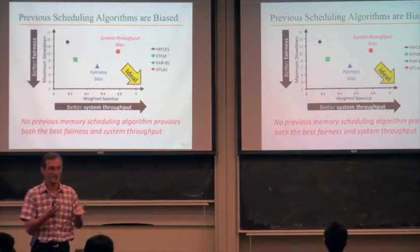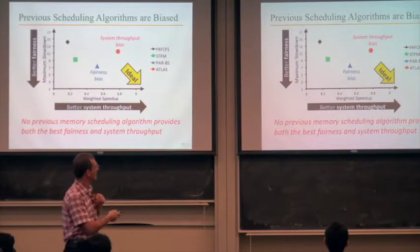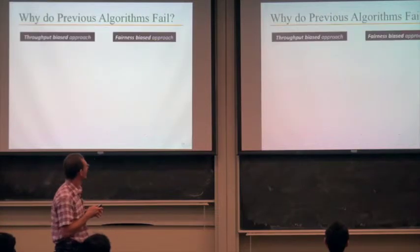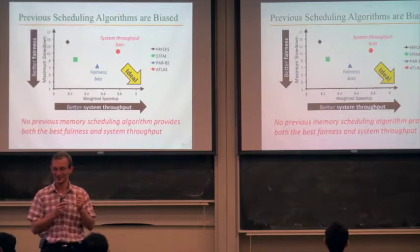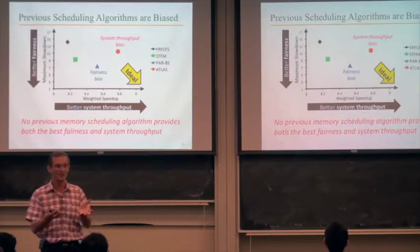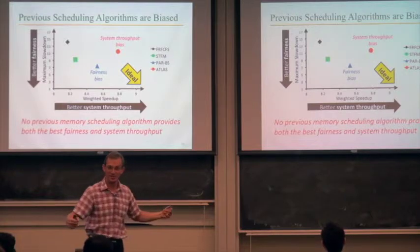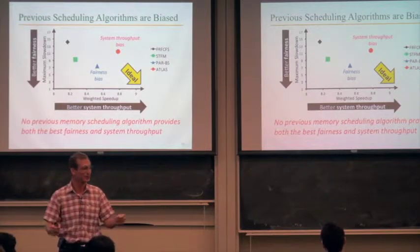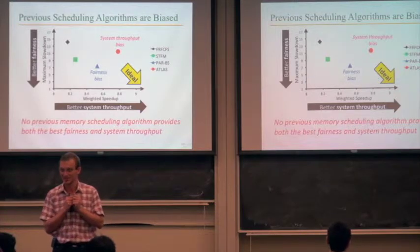So the takeaway is: no single memory scheduling algorithm can provide the best fairness and system throughput simultaneously. When you have multiple metrics to optimize and cannot do so with a single policy, you should design multiple different policies catering differently to different metrics — the answer, again, is asymmetry.